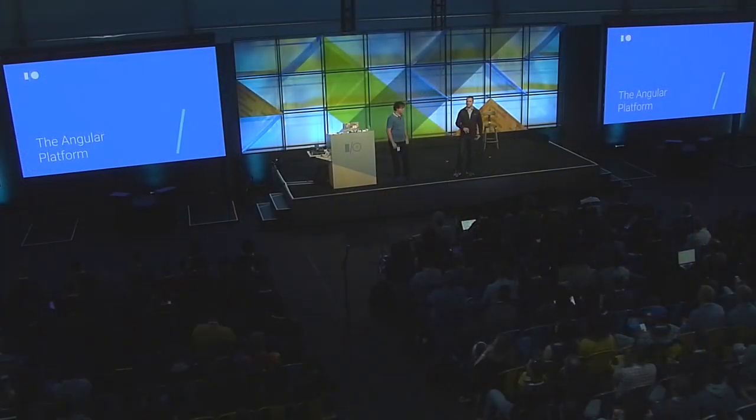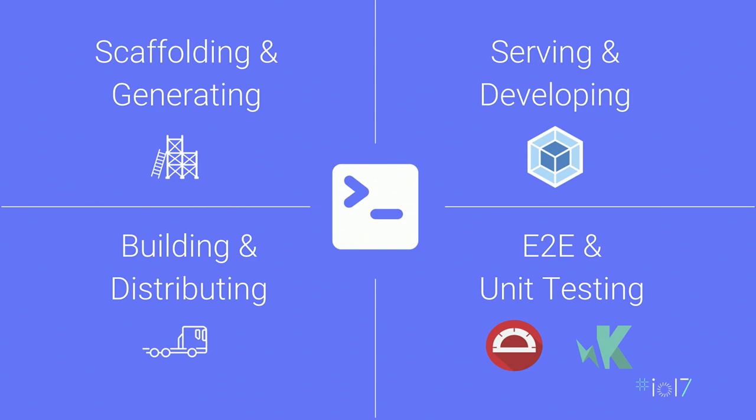Angular is focused on becoming a platform rather than just a framework. The first place our story starts is around the CLI, which is designed to automate all the different processes and tasks you have to do as a developer. It starts with scaffolding a new application with best practices out of the box, then helps you generate new components and modules, and provides a live serving environment so every time you hit File Save, all the translation, compilation, and bundling happens automatically and the browser refreshes incrementally.